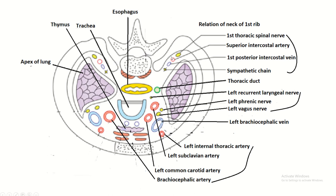This is the first rib, the neck of the first rib, and the anterior relation of the neck of the first rib: sympathetic chain, first posterior intercostal vein, superior intercostal artery, and first thoracic spinal nerve.